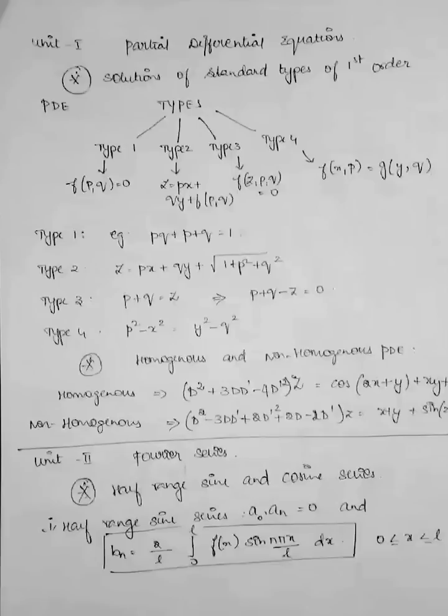Homogeneous example is d² + 3dd' - 4d'². The degree of the equation is 2. In non-homogeneous, if you see the example, d² - 3dd' where the degree is 2, plus 2d'd², the degree is 2, plus 2d, the degree is 1. So it is not the same. So non-homogeneous is not same and homogeneous is same.